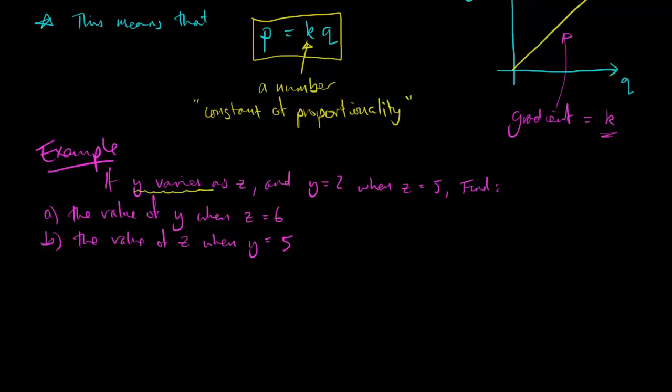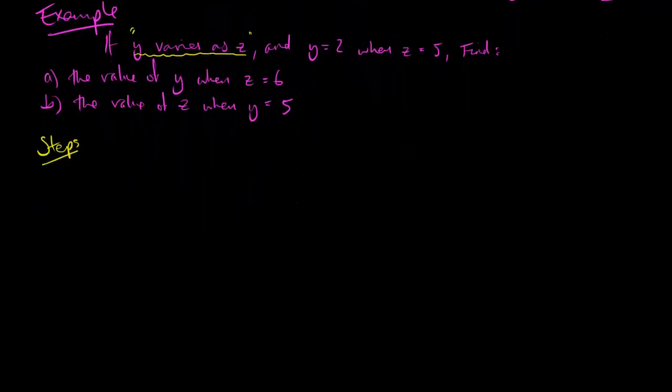So, first of all, this notation, this terminology rather, y varies as z, what does that mean? It's basically just another way that they might say y is proportional to z, or y is directly proportional to z. So that just tells us we're dealing with two quantities that are proportional to each other.